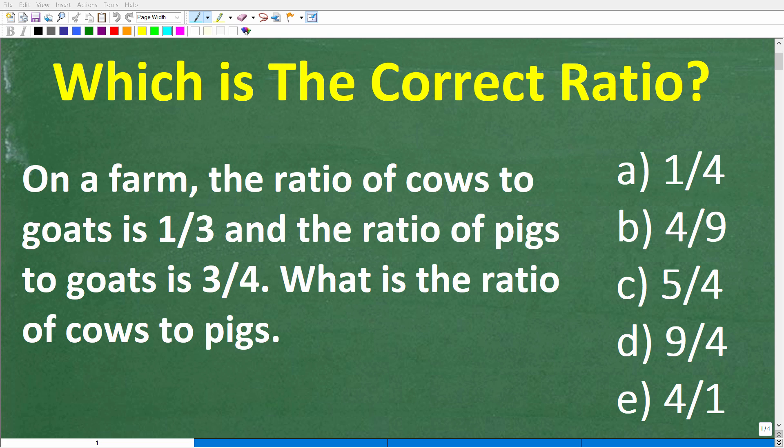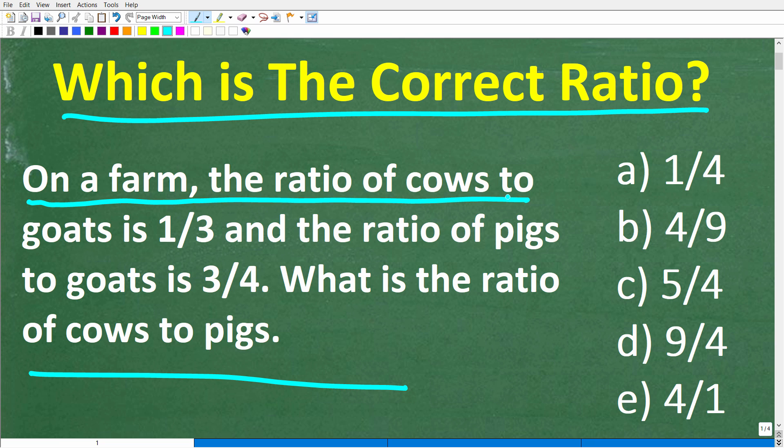I think a lot of people are going to be very confused on how to solve this math problem. But maybe you will be the exception. Let's take a look at our problem. So the main question here is, which is the correct ratio? This is a multiple choice math question. On a farm, the ratio of cows to goats is 1 to 3, and the ratio of pigs to goats is 3 to 4. What is the ratio of cows to pigs?